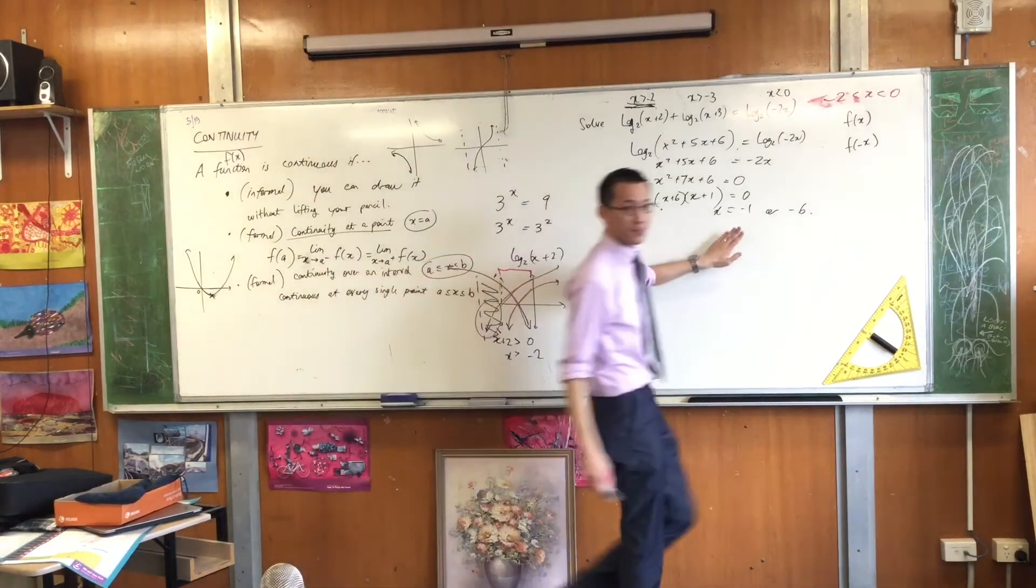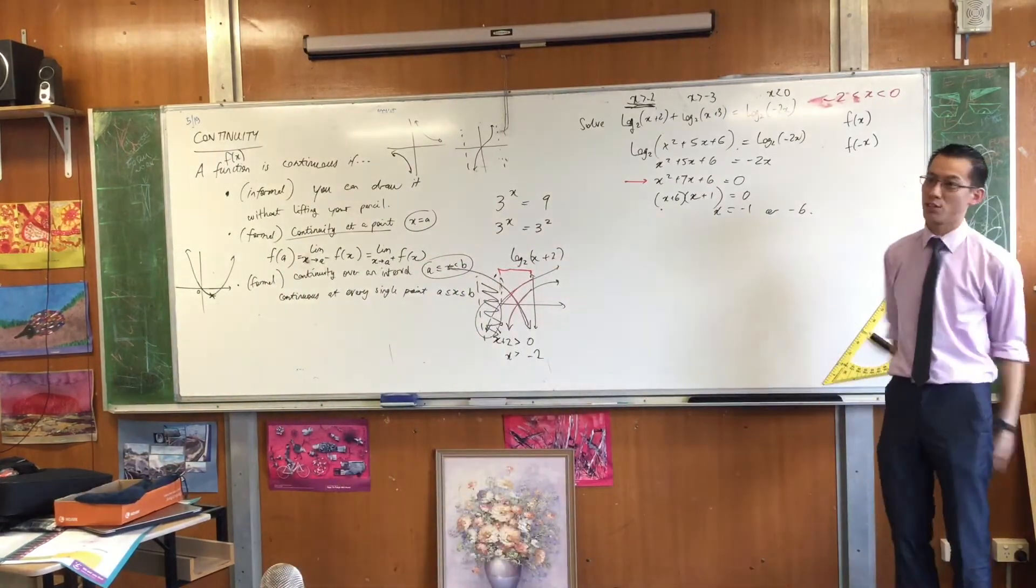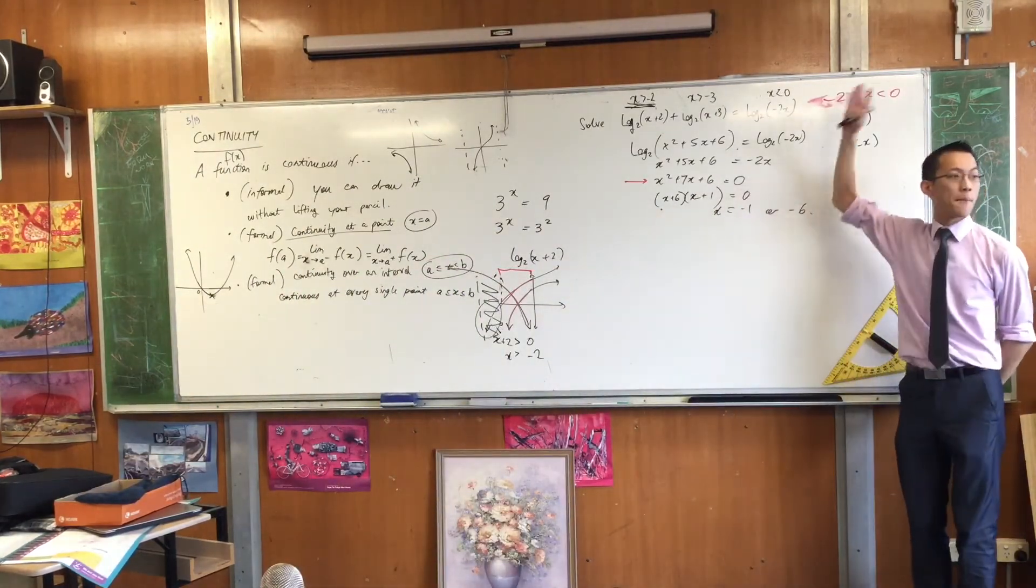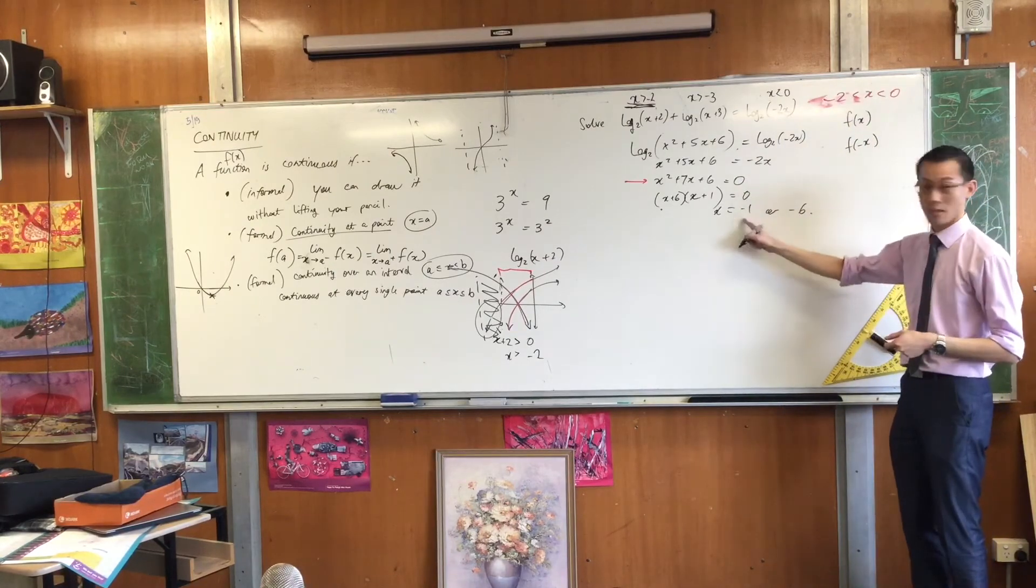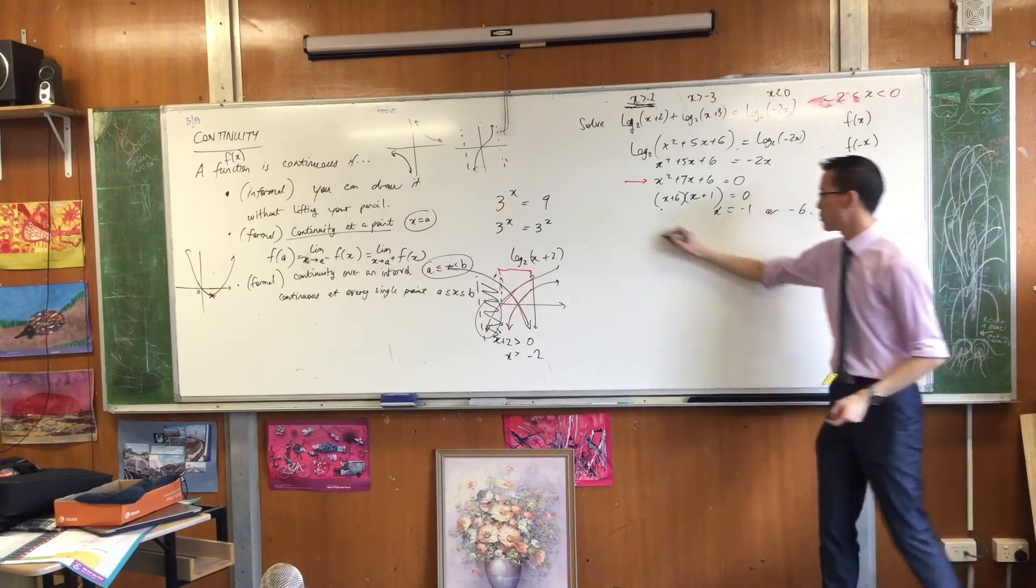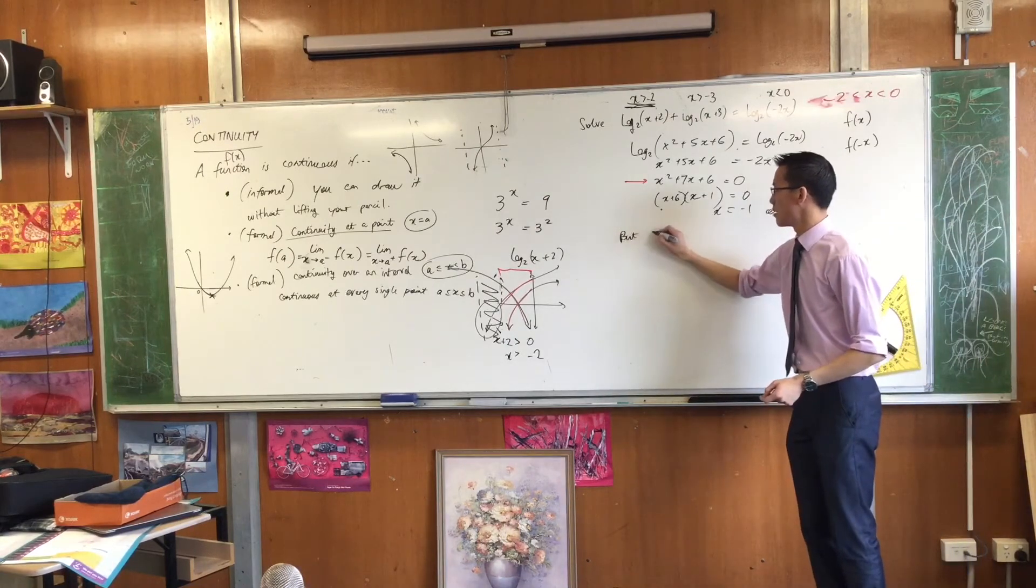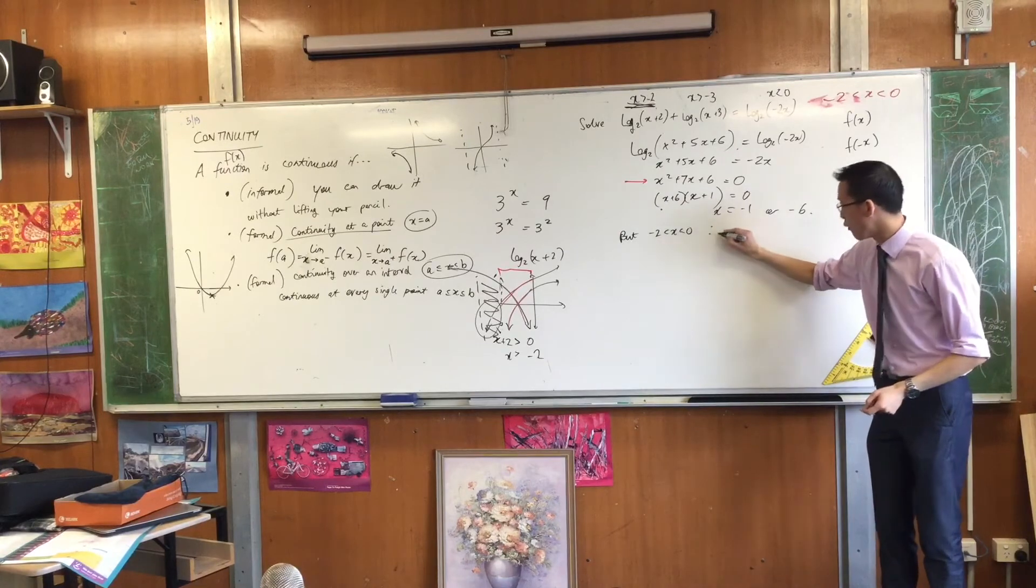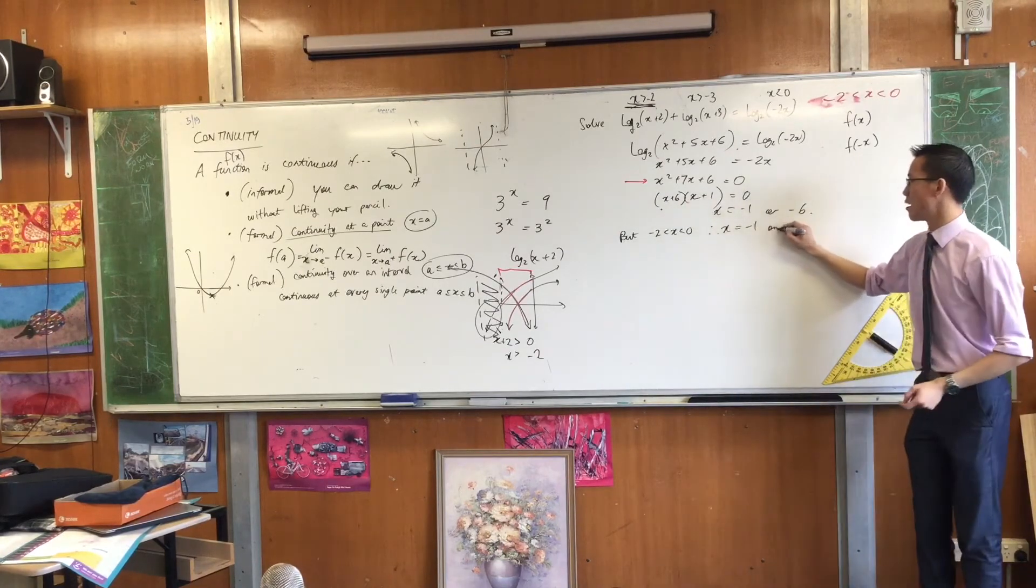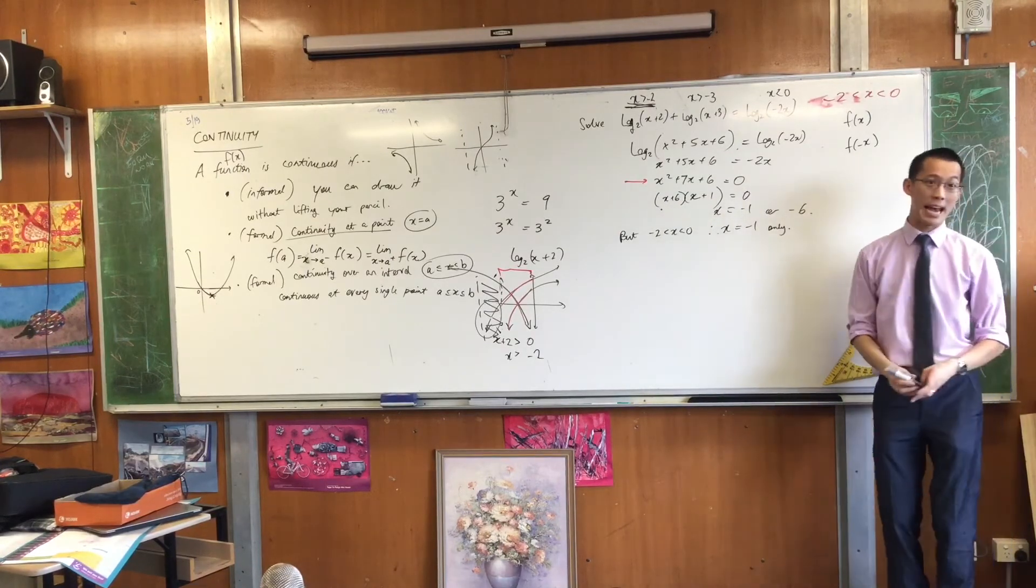So now, when you have a look at this, you can see not all of the solutions that we've found through the quadratic meet these conditions. Only one of them does. Namely, this guy. So the way I would say it is, but this restriction is in place. Therefore, x is negative one only, as negative six is outside the domain.